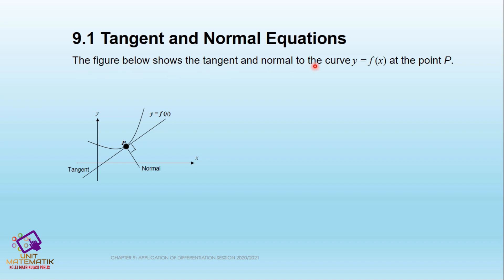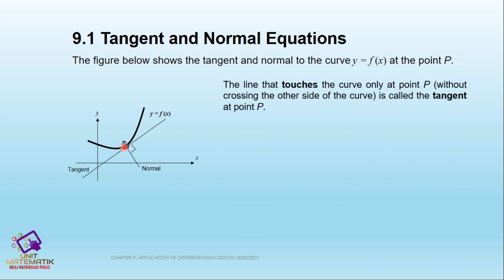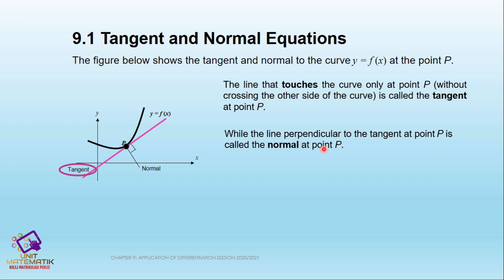The figure shows the tangent and normal to the curve y = f(x) at point P. The line that touches the curve only at point P without crossing the other side of the curve is called the tangent at point P. The line perpendicular to the tangent at point P is called the normal at point P.